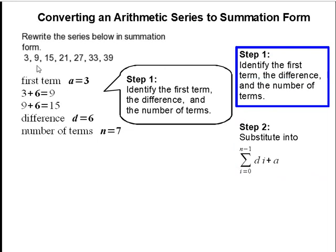The difference here is the number we add to get from one term to another. So in this case we add 6 to 3 to get to 9, then we add 6 to 9 to get to 15. So our difference here is 6 and we're going to use d to represent that.